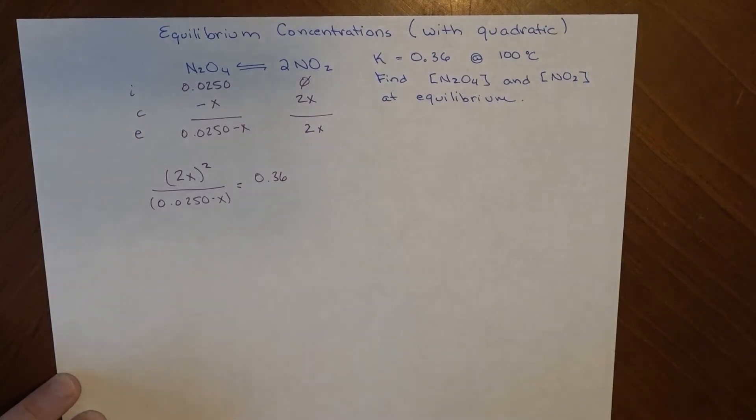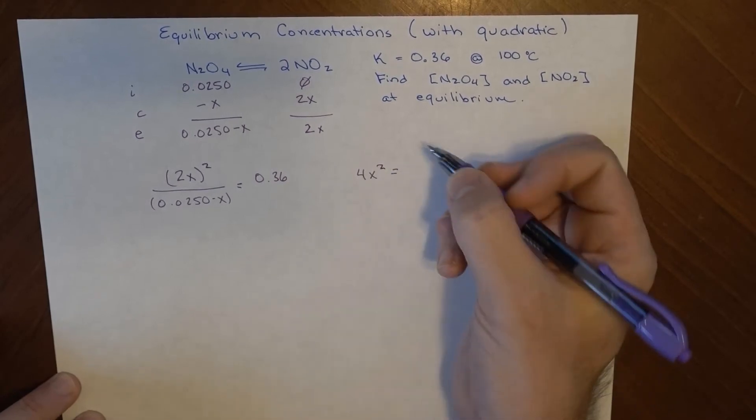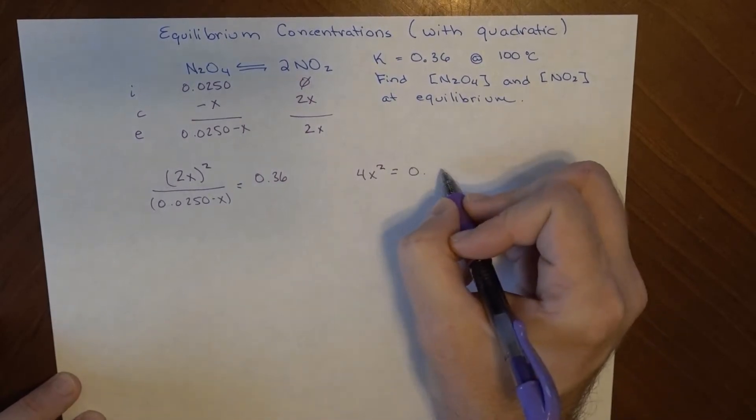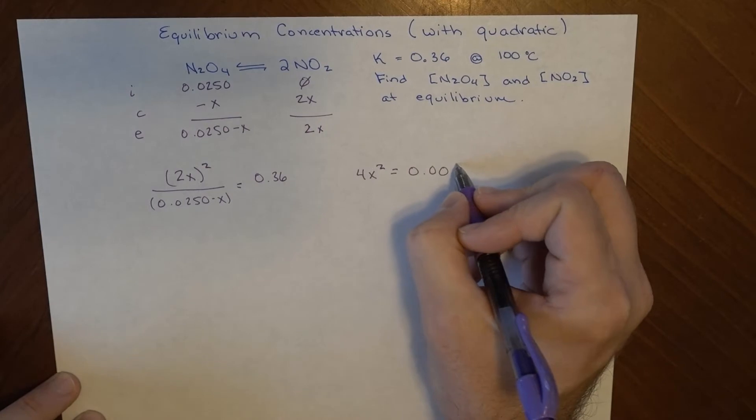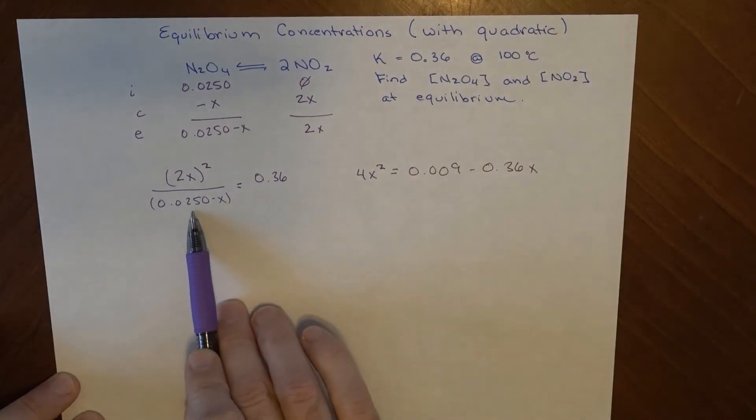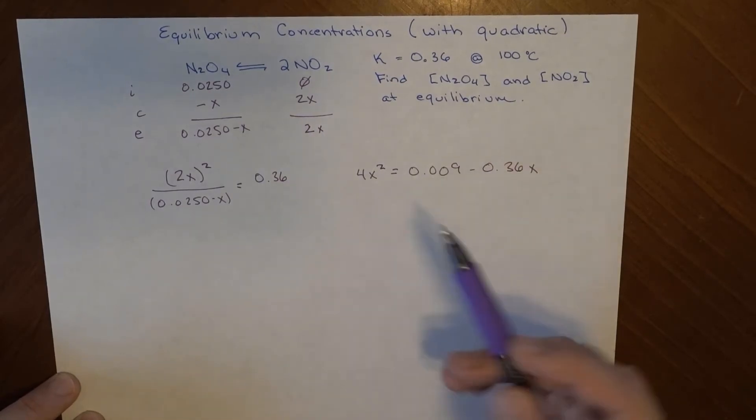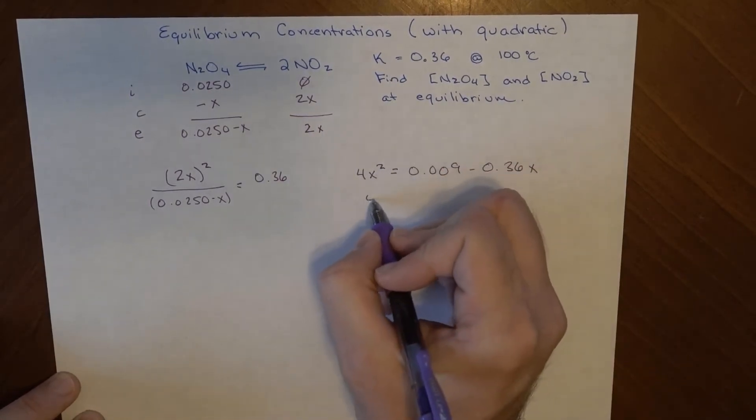And if I simplify this, that becomes 4x squared equals 0.009 minus 0.36x. So all I did is I just multiplied both sides by this expression. Now I've got this, and I can rewrite this way.